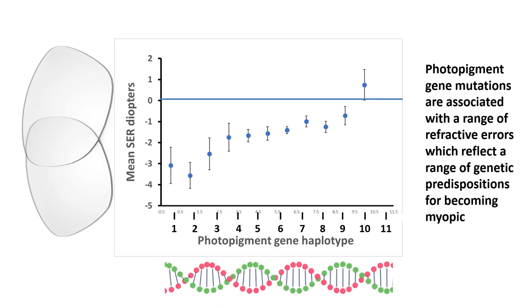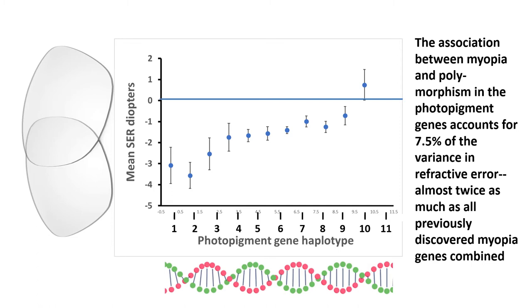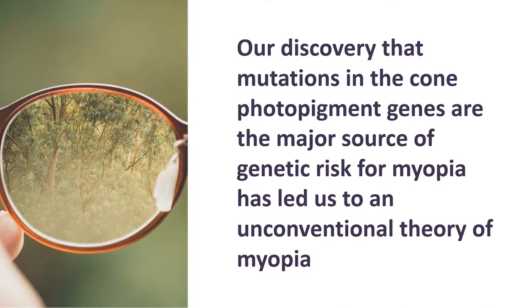Here we plotted the split halves data showing the mean spherical equivalent refraction in diopters versus the photopigment gene haplotype. You can see that the photopigment gene mutations are associated with a range of refractive errors, and this reflects a range of genetic dispositions for becoming myopic. The association between myopia and polymorphisms in the photopigment genes accounts for 7.5% of variance in refractive error. This is almost twice as much as previously discovered myopia genes combined. Our discovery that mutations in the cone photopigment genes are the major source of genetic risk for myopia has led us to an unconventional theory of myopia, which Jay is going to tell you about now.